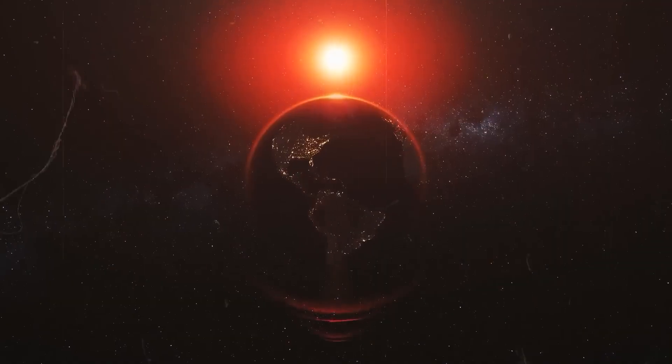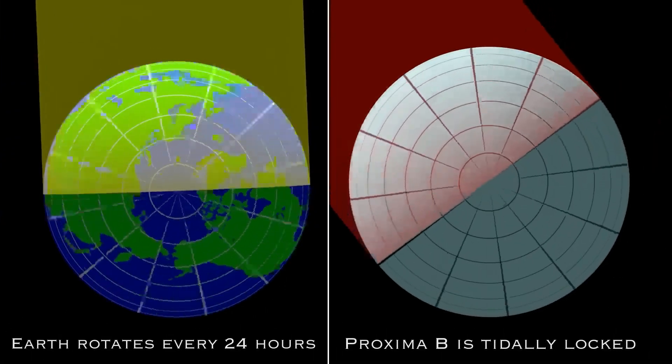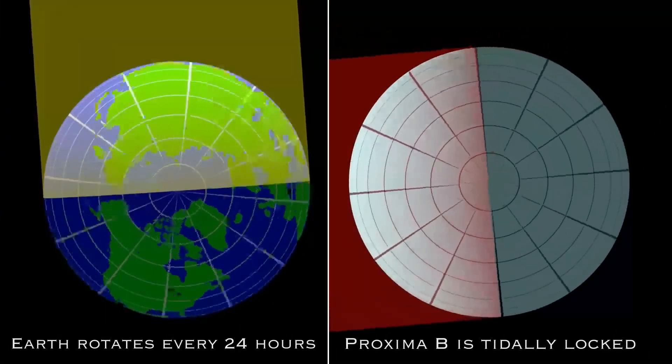Proxima b's tidal locking creates a planet of extremes, perpetual daylight on one side and freezing darkness on the other.